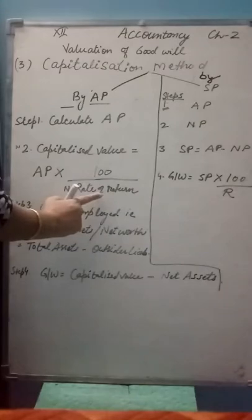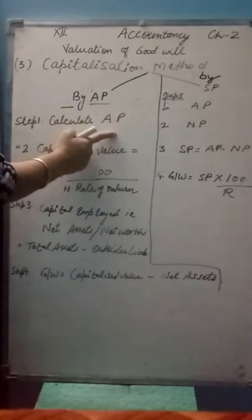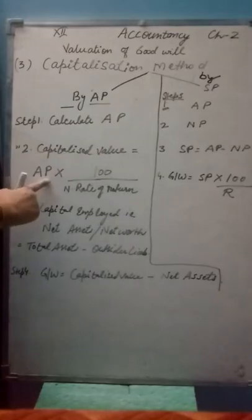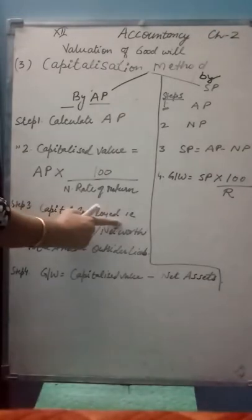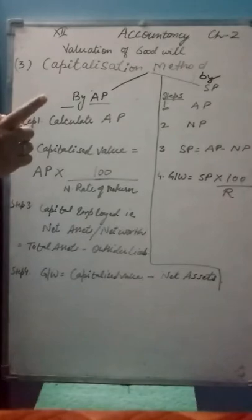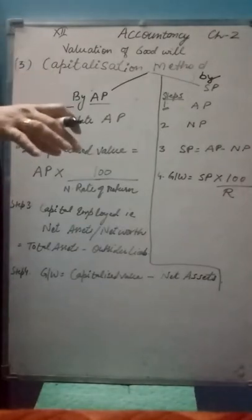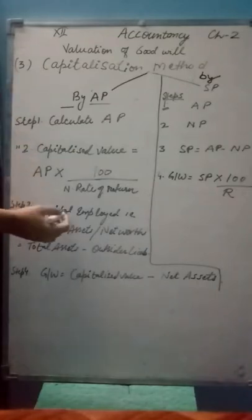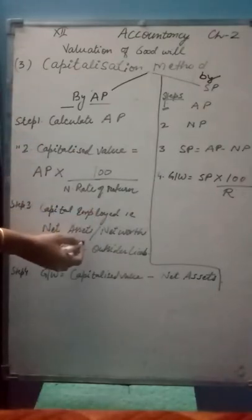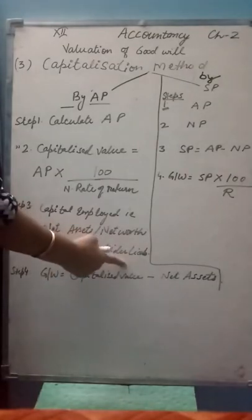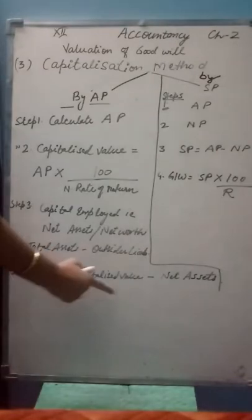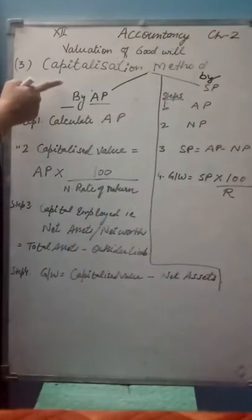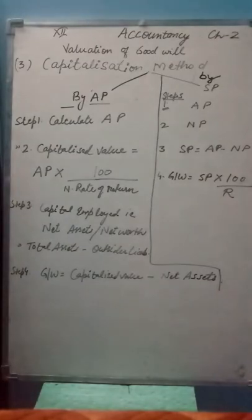The normal rate of return is given in the question. If not given, you calculate it through profits upon number of years. Then Step 3: capital employed, which equals net assets - total assets minus outside liabilities, also called net worth. Step 4: goodwill equals capitalized value minus net assets.